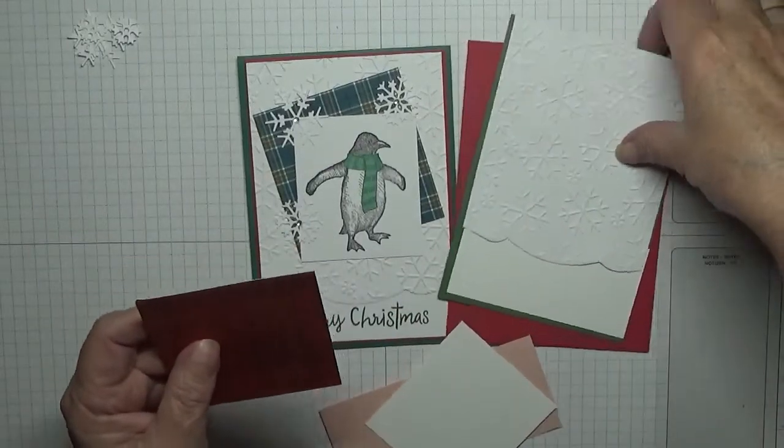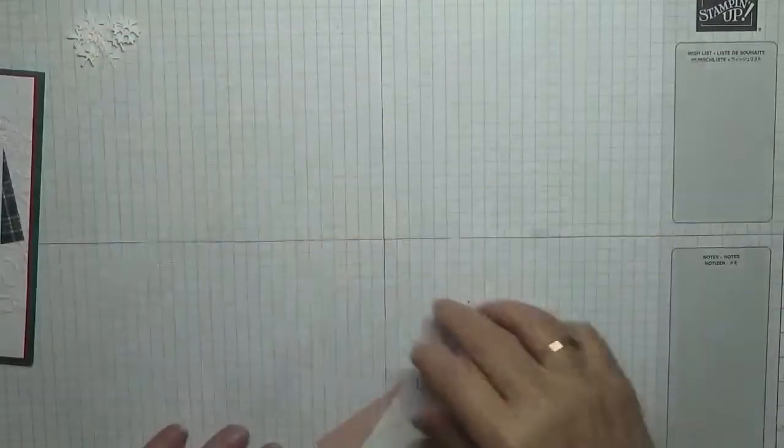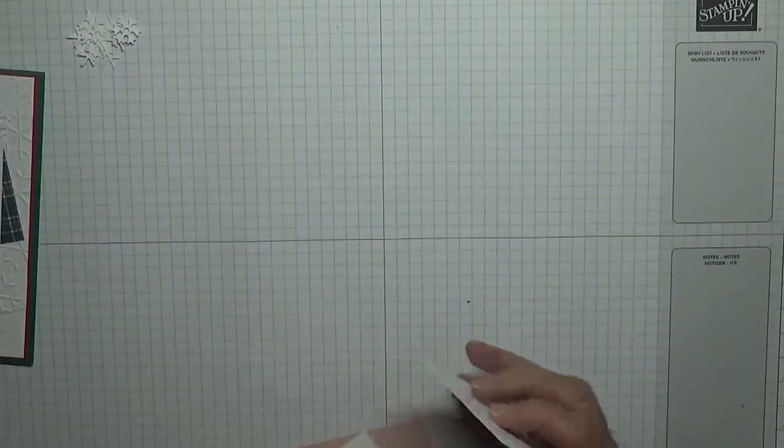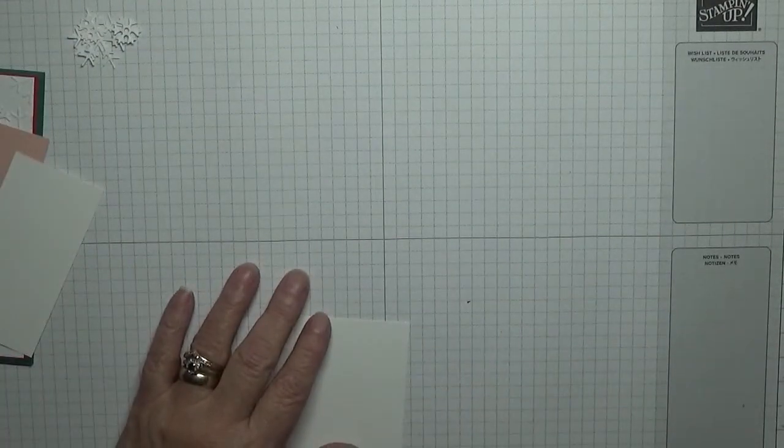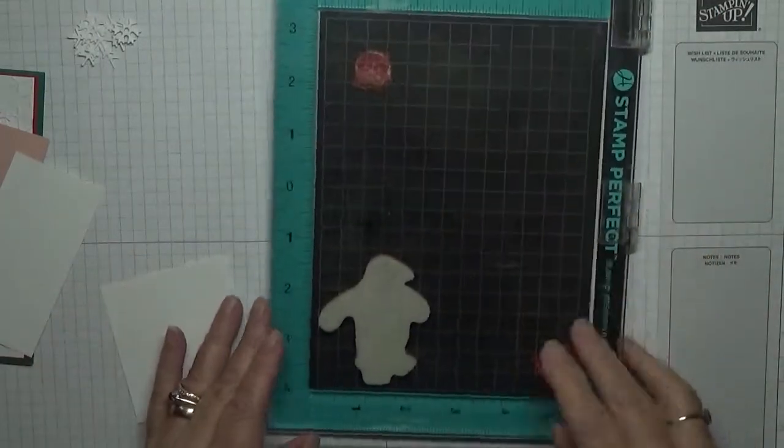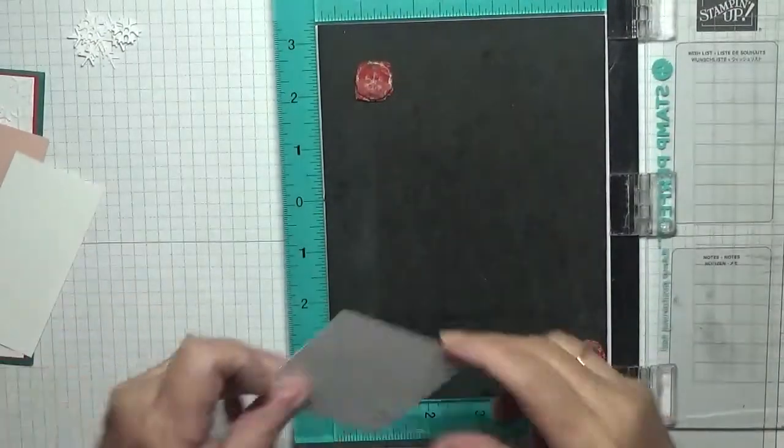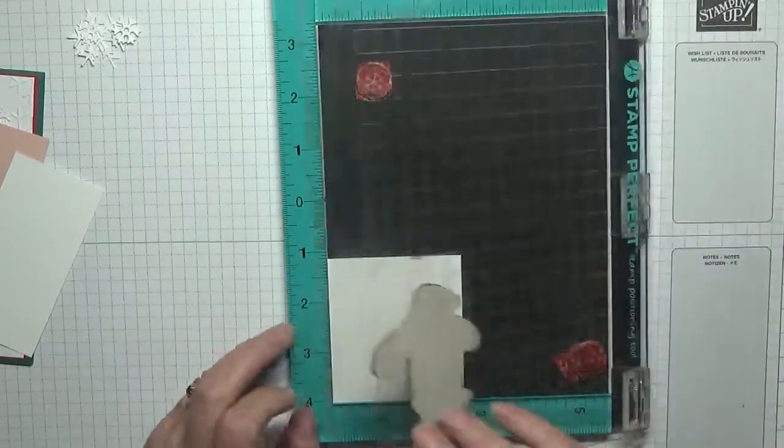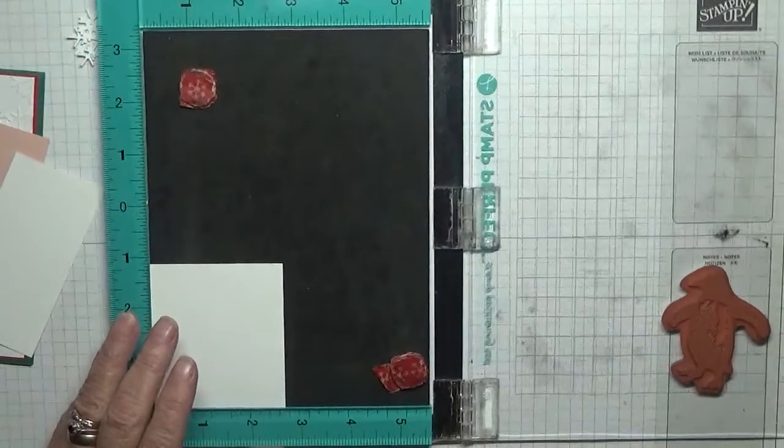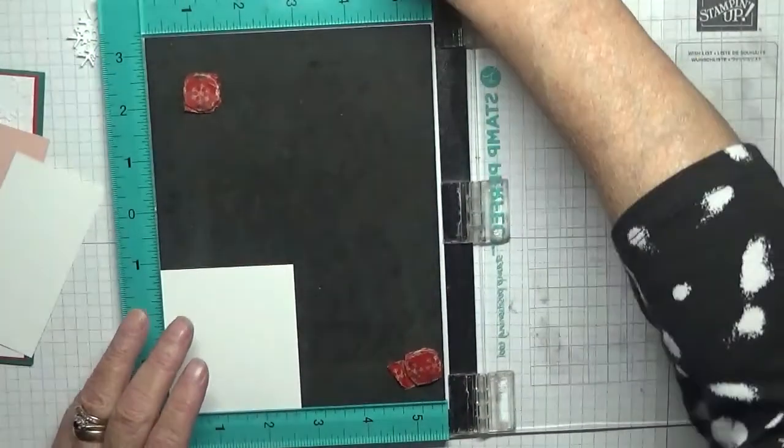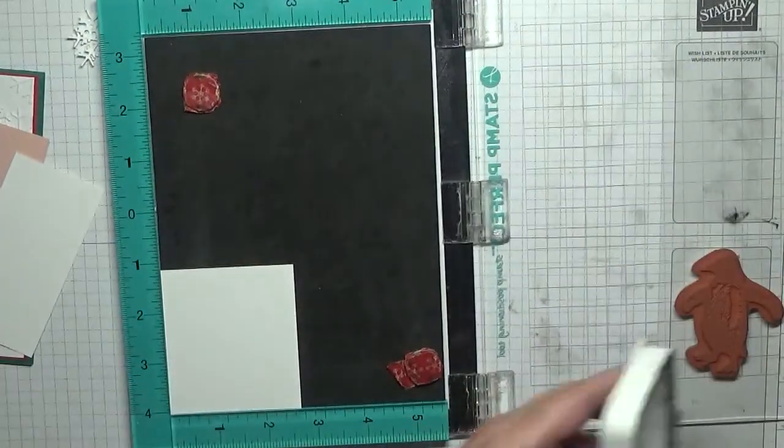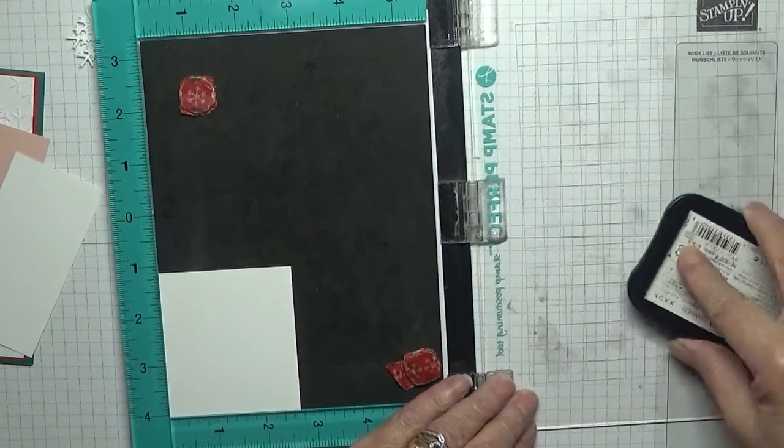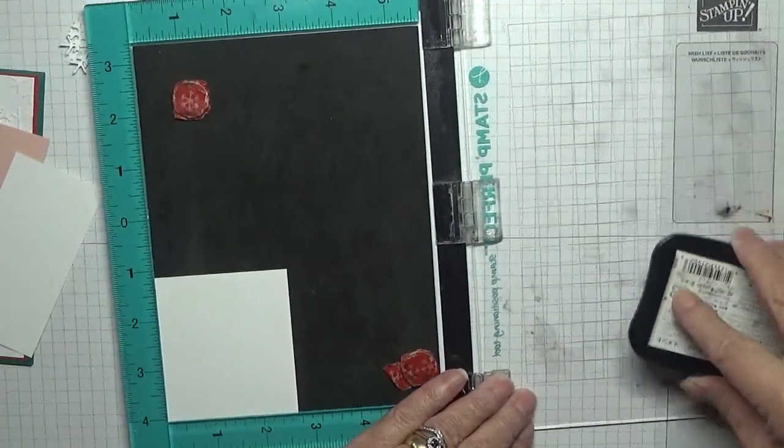So to get started, we need to stamp our penguin. I'm going to be using my stamping platform for that. I've already mounted my penguin that way only because if you stamp this penguin, sometimes you don't get a nice image out of it. I might have to stamp it twice, so it's easier using this.